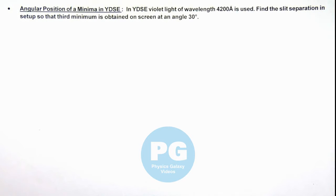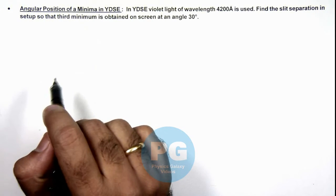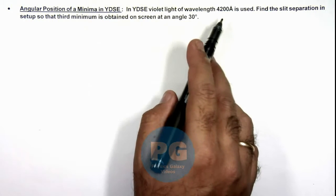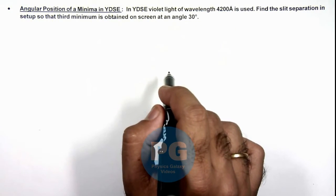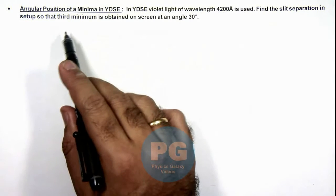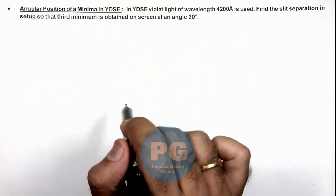In this illustration, we'll analyze the angular position of a minima in YDSE. We are given that in YDSE violet light of wavelength 4200 angstrom is used, and we are required to find the slit separation in setup so that third minimum is obtained on screen at an angle of 30 degrees.